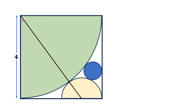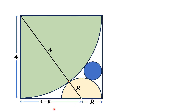First of all, we draw a line segment from the corner of the square — which is actually the center of the quarter circle — to the center of the semicircle. This length is 4 units because the radius of the quarter circle is 4. Let the radius of this semicircle be capital R. If this length is R, then this length is also R, and this leg length is 4 minus R.